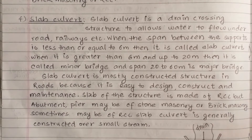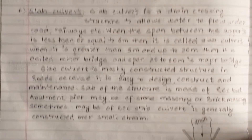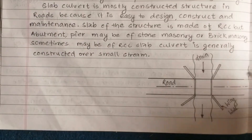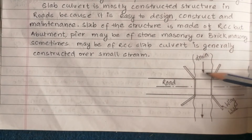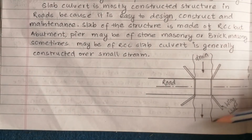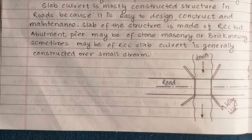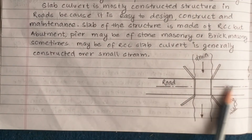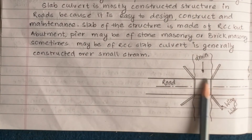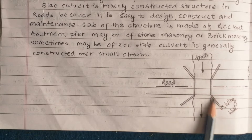Now we have a canal fall. We have a drain, we have a road, a culvert slab, and a wing wall.